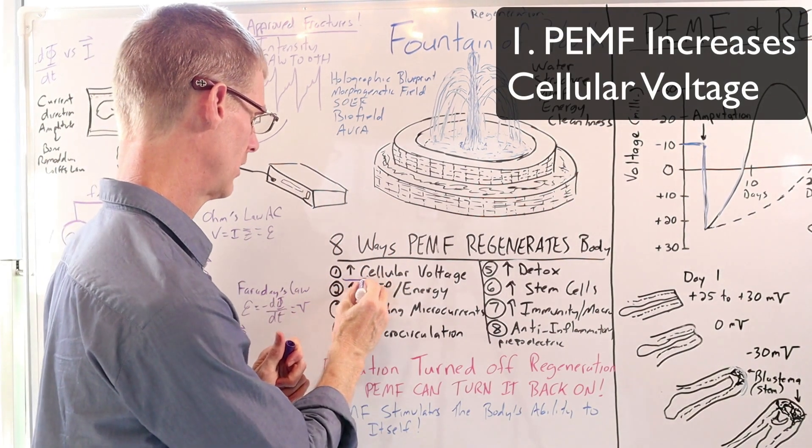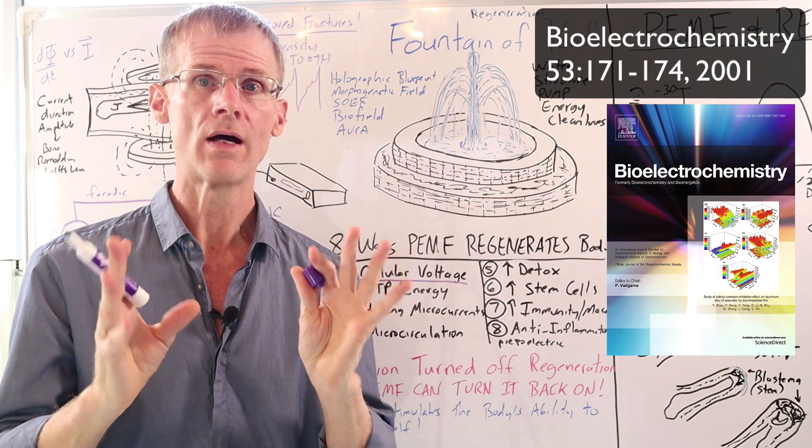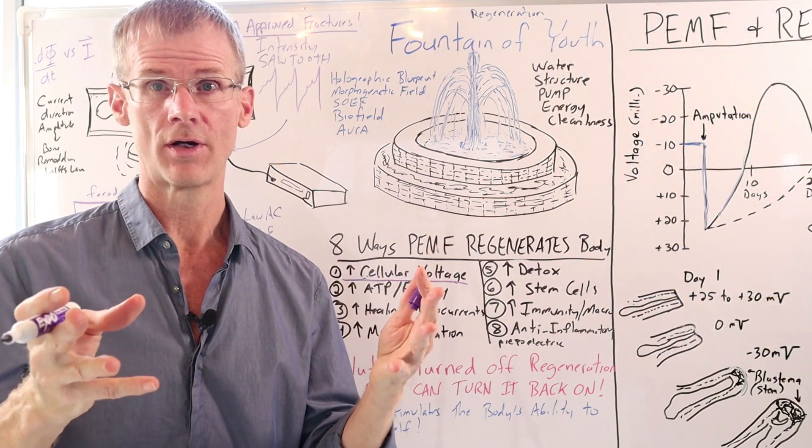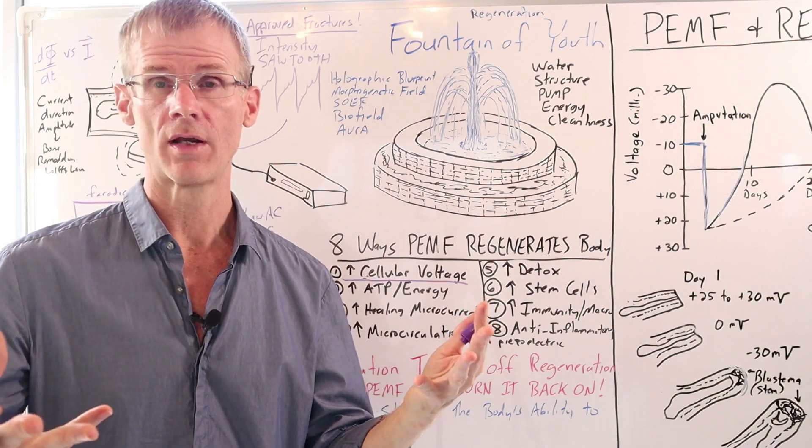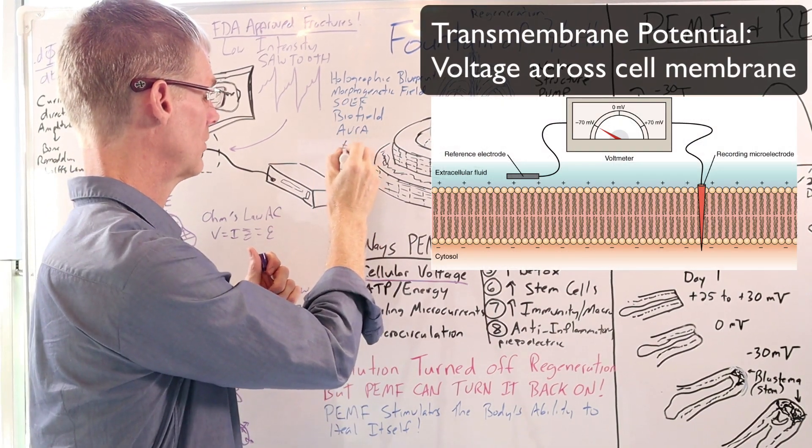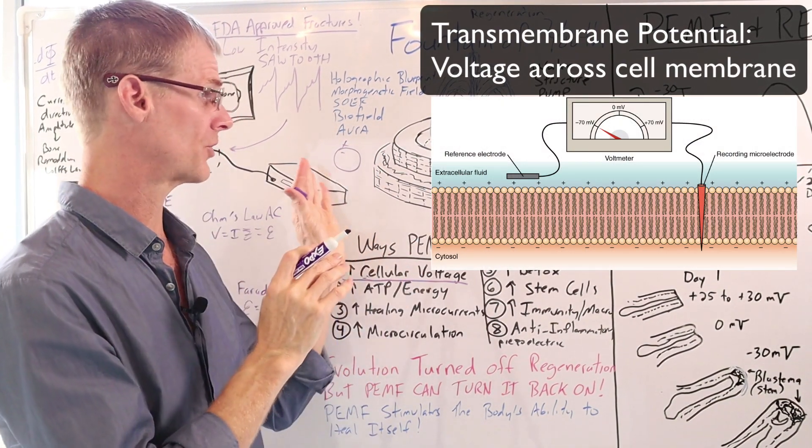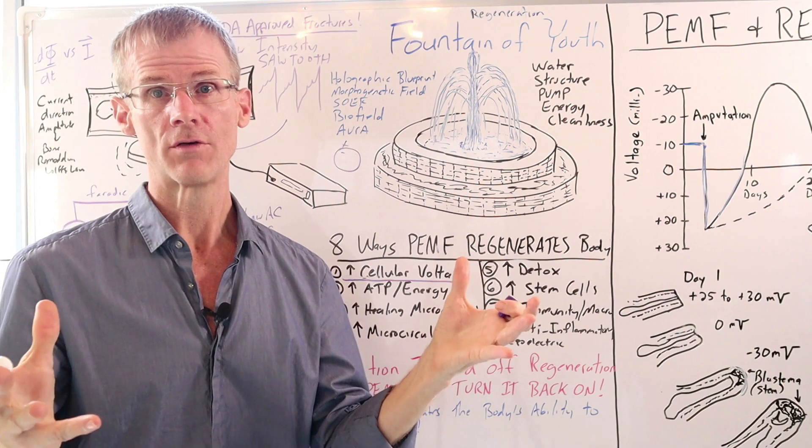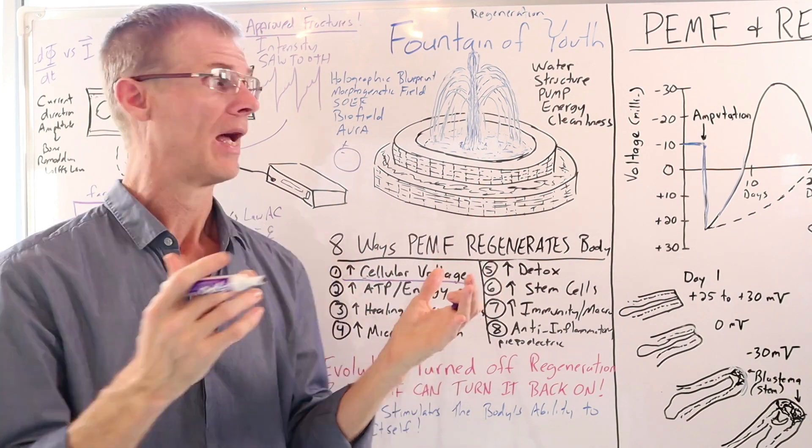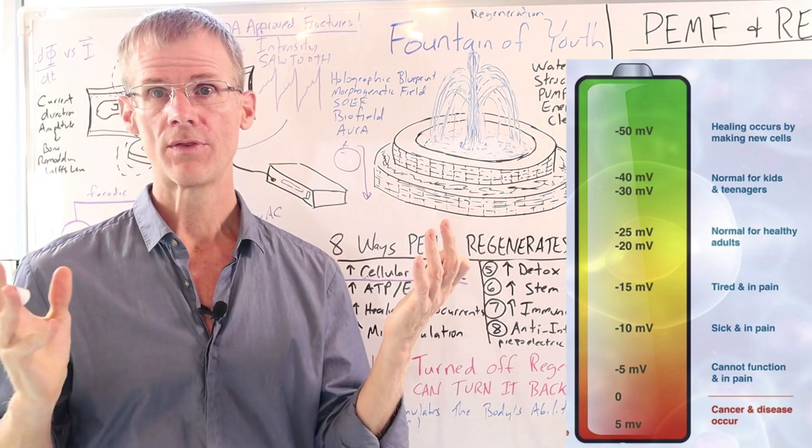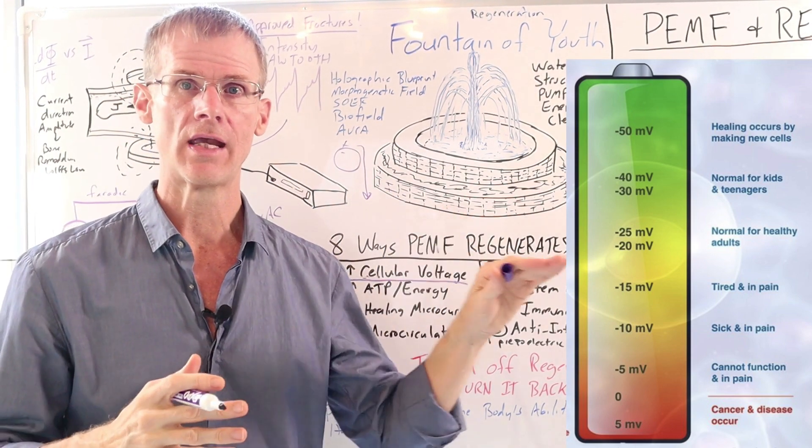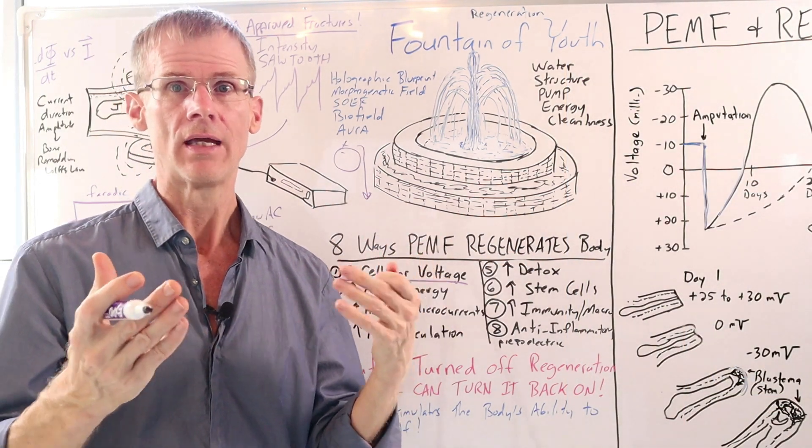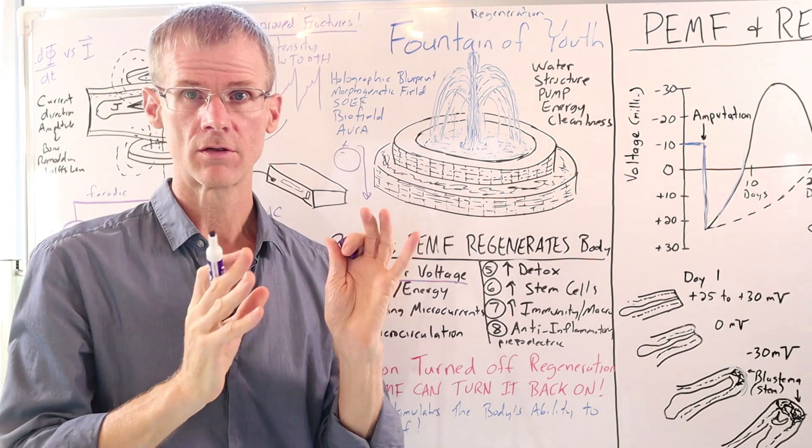So first and foremost, PEMF therapy helps by increasing cellular voltage. There was a study done in 2001 that showed that PEMF therapy stimulates the enzymes in the sodium-potassium pump to stimulate the voltage across the cell membrane. Because our cells have a positive charge on the outside and a negative charge on the inside. And this is called the transmembrane potential. And it's this voltage where energy is primarily stored in the body. And as I've talked about in other videos, it's one of the main reasons that we stay healthy. Where as our voltage drops, we end up with things like chronic fatigue and ultimately down to cancer when our cell voltage drops really low.